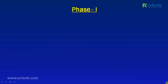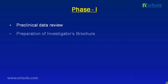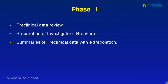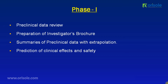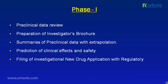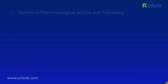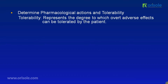Now let us see the phase 1 studies. In phase 1, the preclinical data is reviewed and the investigator's brochure is prepared. Summaries of preclinical data are extrapolated, the prediction of clinical effects and safety is done, and the Investigational New Drug (IND) application is filed with the regulatory authority. Phase 1 studies are done to determine pharmacological actions and tolerability, where tolerability represents the degree to which adverse effects can be tolerated by the patient.